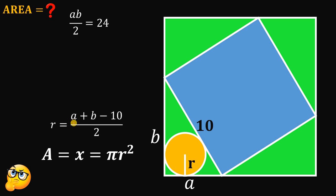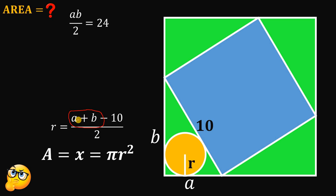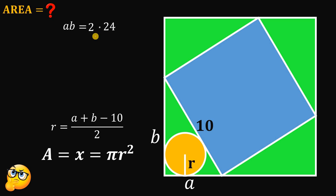Now if we can find the value of A plus B, we can find the value of the radius. We know that AB over 2 equals 24, so AB must be equal to 2 times 24, which is 48.